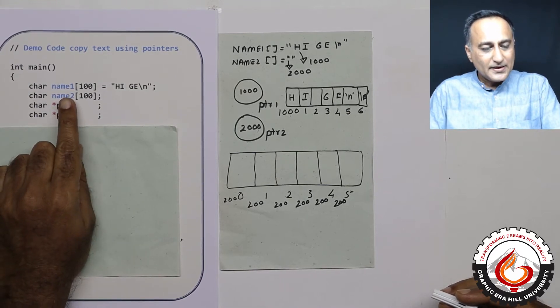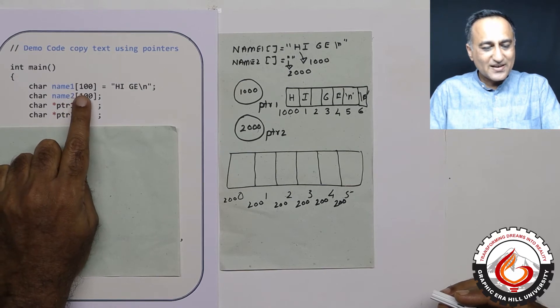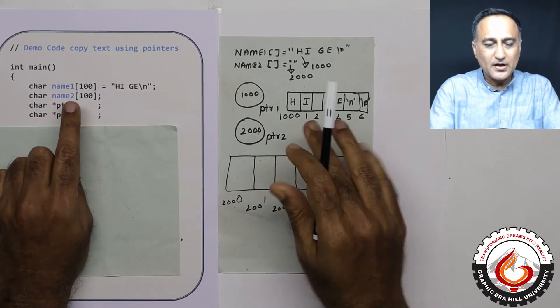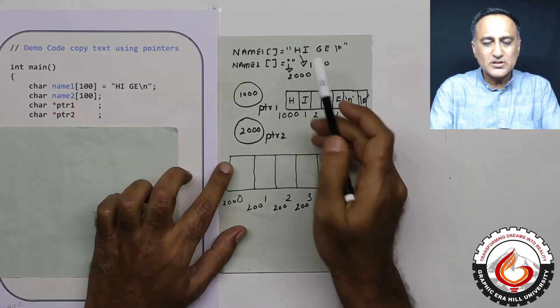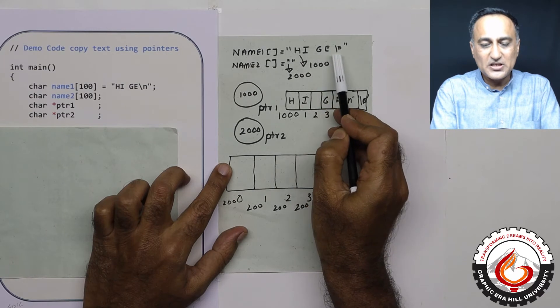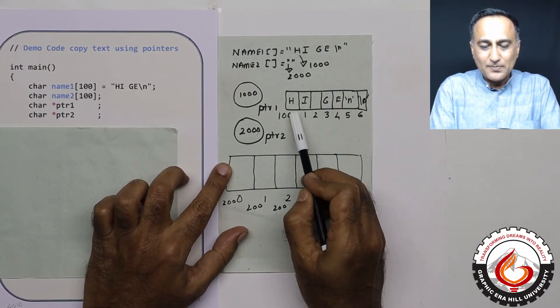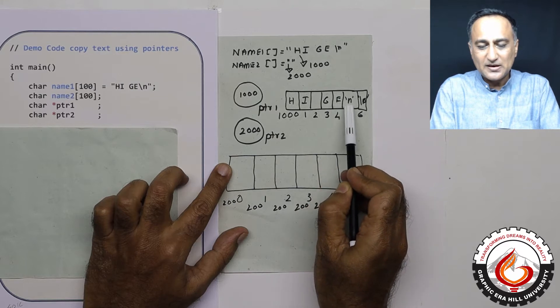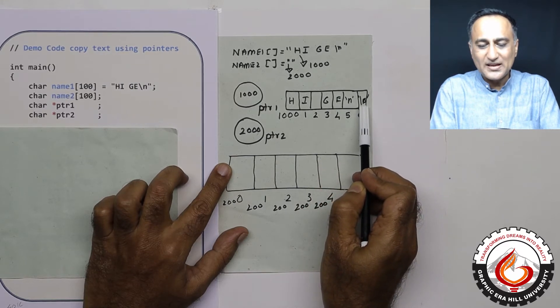I have defined name1 as an array with size 100 and given it the initial message hi ge backslash n. So name1 is going to look something like this: h, i, space, g, e, backslash n. So if I represent it in memory, h, i, space, g, e, the enter character, and this is going to be the null character.